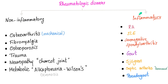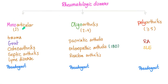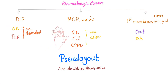Pseudogout and gout are inflammatory, and that's why ESR and CRP may be high. Rheumatological diseases are either monoarticular, oligoarticular, or polyarticular. Pseudogout could be either one. Does it affect the DIP? No — I'll leave that for osteo and psoriatic arthritis. Does it affect the MCP and wrist? Yes, it's very similar to rheumatoid. Does it affect the big toe? No.